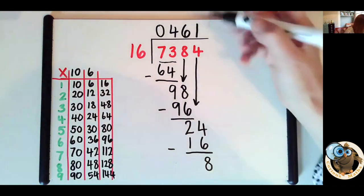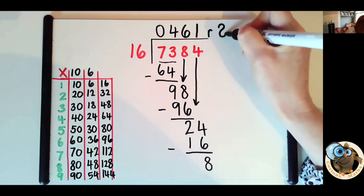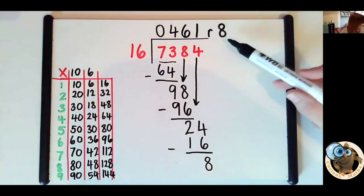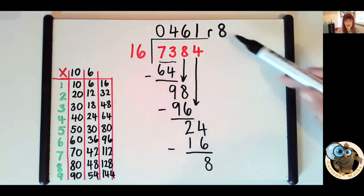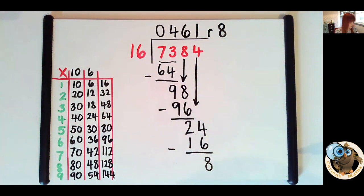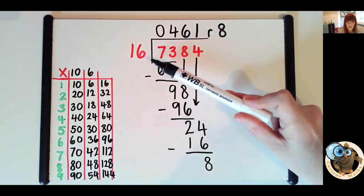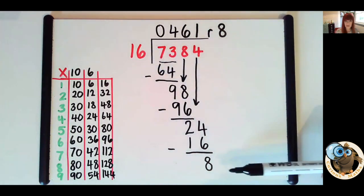And we represent that with an R, either small or big, depends what your child's school does. And we put remainder 8, and that's how we represent it. And the key to this is your child understanding that as soon as they get down to a number smaller than 16, then it's always going to be the remainder.